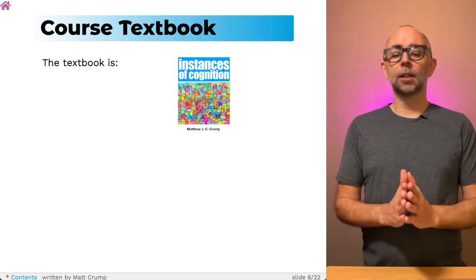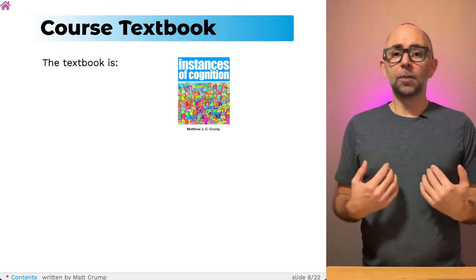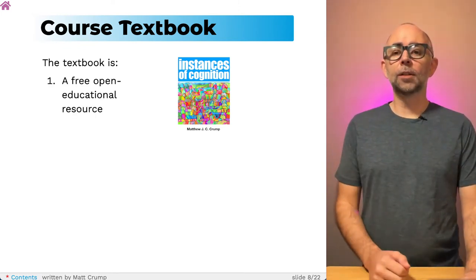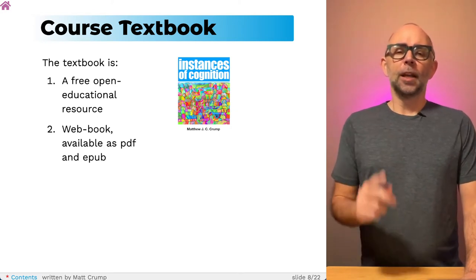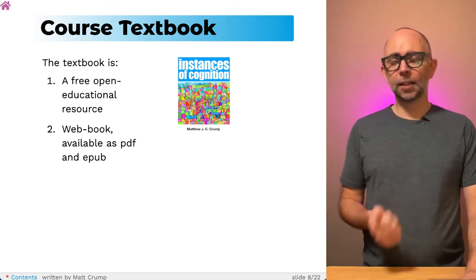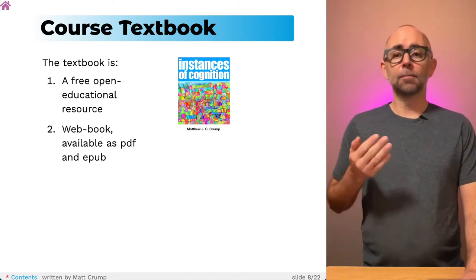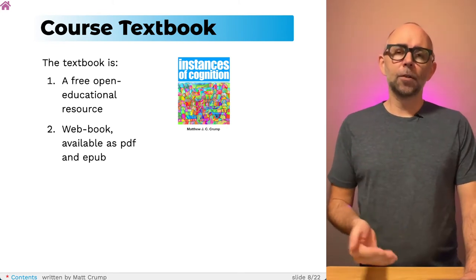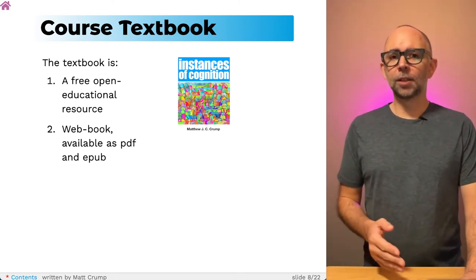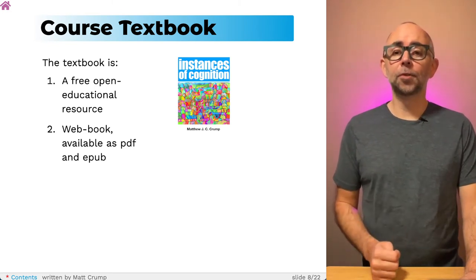Here is the textbook. It's called Instances of Cognition. It's something that actually I've been writing, so it's a work in progress. It's free. It's available as a web book, as a PDF, and as an EPUB. But I'll tell you right now, it's better read as a web book. The formatting is made for the web. The PDF version and the EPUB version still need to be improved in terms of their formatting. But you can download them and use them if you want.